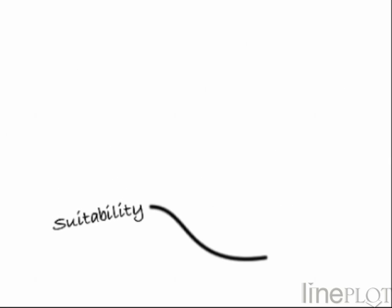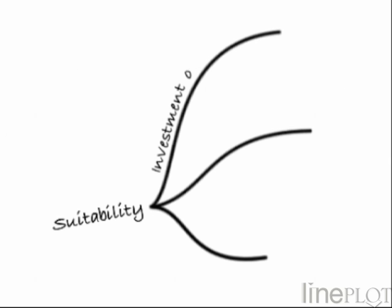The Northfield implementation of AHP starts by defining the needs and preferences of potential investors. We call the overall fit to these factors suitability. From here, a financial advisor can build a multi-level tree of additional factors — perhaps some about objectives, some about risk, and some about income.